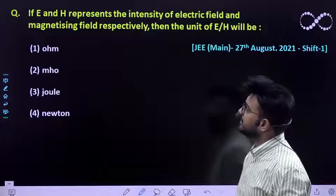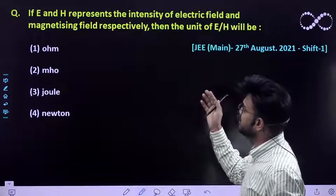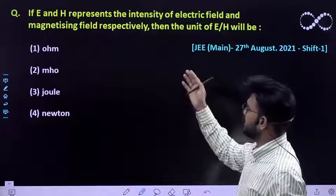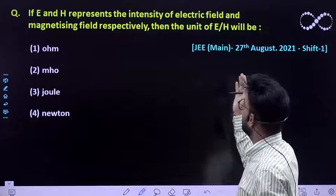Let us see this question. If E and H represent the intensity of electric field and magnetizing field intensity respectively, then the unit of E/H will be: